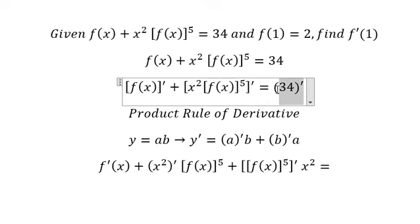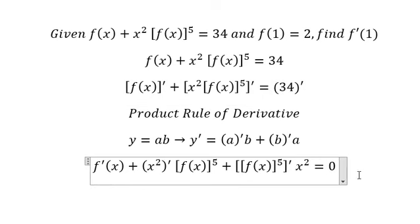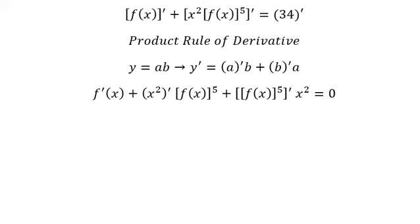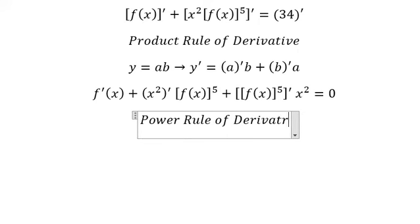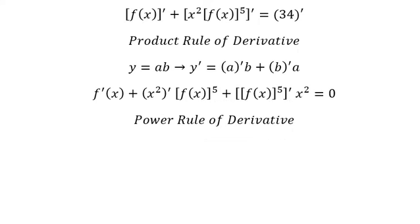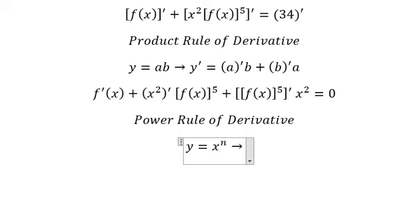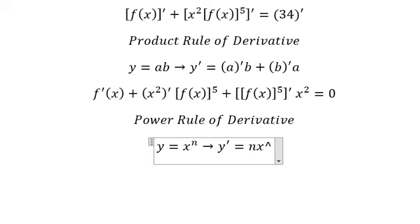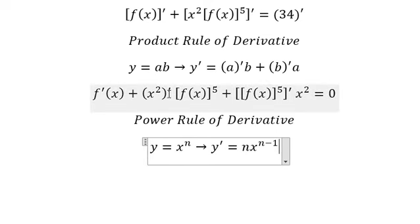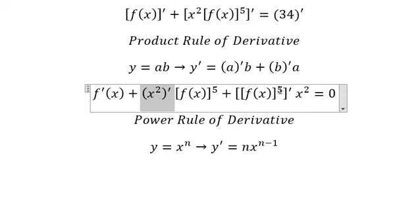The first derivative of the constant here gives zero. Now for the next part, we can apply the power rule of derivative. For example, if y equals x to the power of n, the first derivative gives n times x to the power of n minus one. We can apply this here.